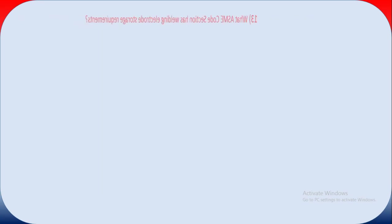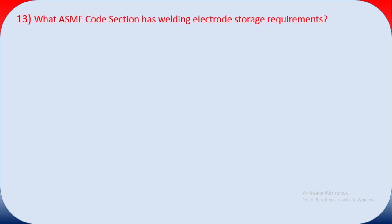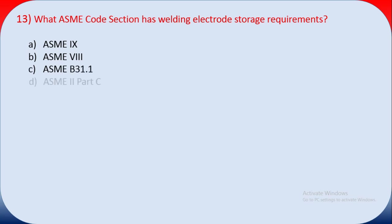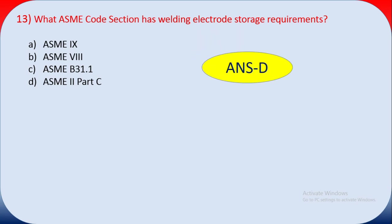Question thirteen: what ASME code section has welding electrode storage requirements? Options: A ASME Section 9, B ASME Section 8, C ASME B31.1, D ASME Section 2 Part C. The answer is D — ASME Section 2 Part C covers filler metal requirements, including storage requirements for welding electrodes.